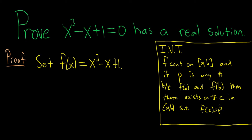And basically, it just says that your function takes on all intermediate values between f of a and f of b. So if this is f of a and this is f of b, it takes on every value between those two.